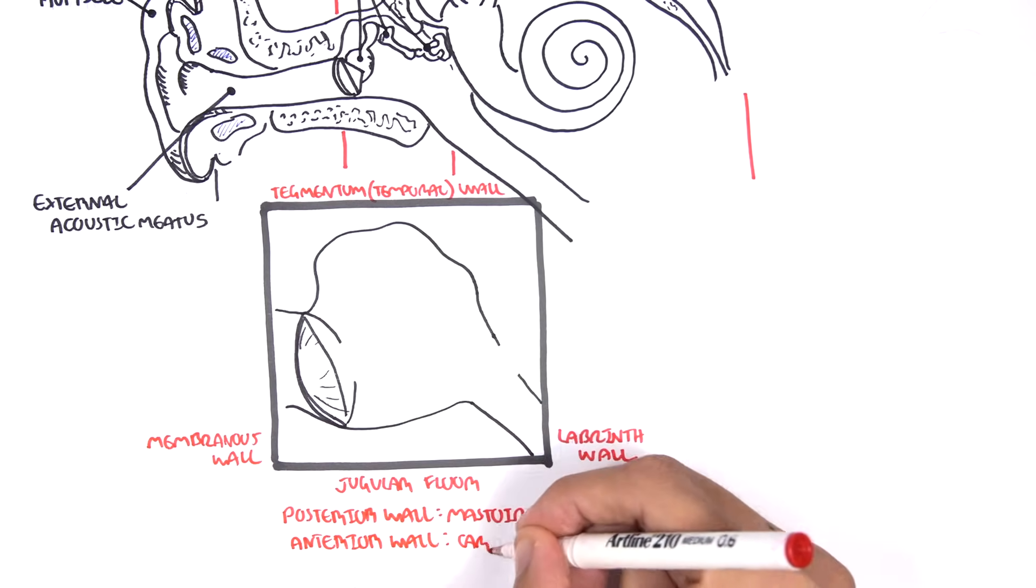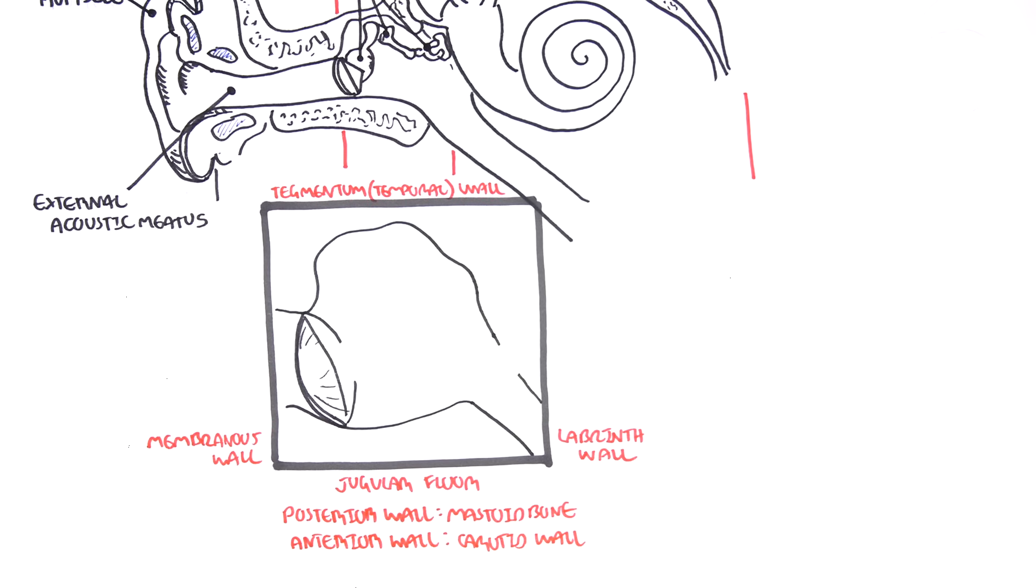Then we have the anterior and the posterior walls, so the front and the back. The posterior wall is your mastoid bone and the anterior wall is your carotid wall because your carotid passes through there.